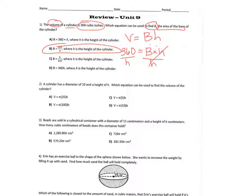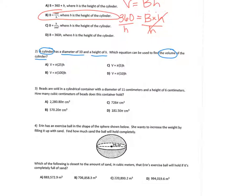Number two, a cylinder has a diameter of 10 and a height of H. Which equation can be used to find the volume of the cylinder? First thing, do we ever use the diameter in these formulas? What do we use? The radius. We use half it. So we cut that diameter in half. So radius is actually 5.